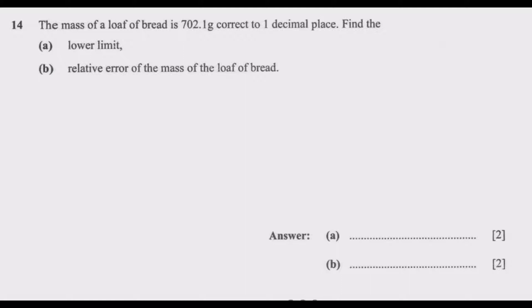Basically, we are given the mass after being corrected to one decimal place. Then the question is, what would be the possible lowest value that this mass would take before being corrected to one decimal place? That's basically how you approach this question.